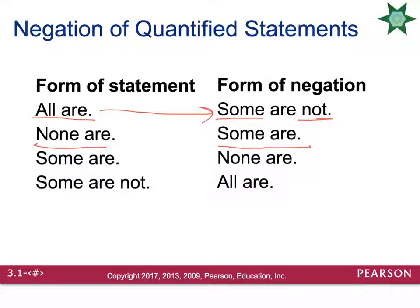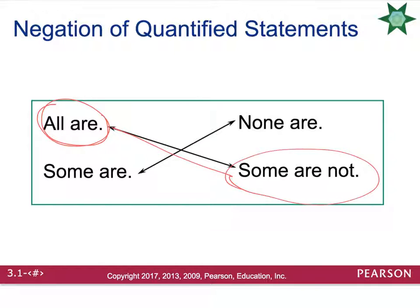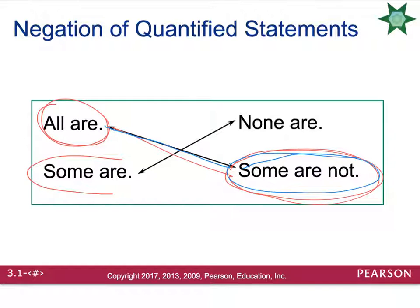'Some of my friends are blonde' negates to 'none of my friends are blonde.' And 'some of my dogs are not trained' negates to 'all of my dogs are trained.' The table summarizes: 'all' pairs with 'some are not,' and 'some are' pairs with 'none are' — and vice versa. Change from positive to negative and change the quantity.